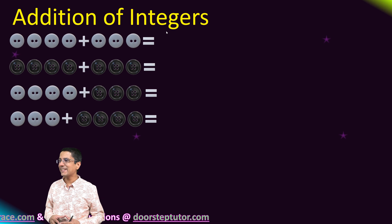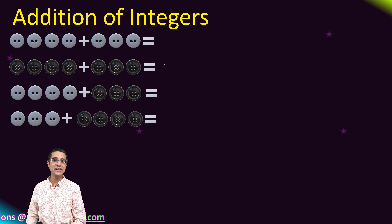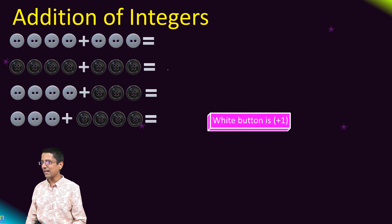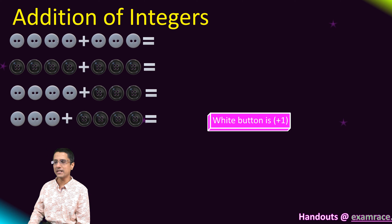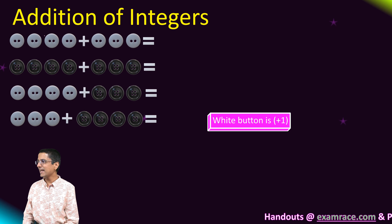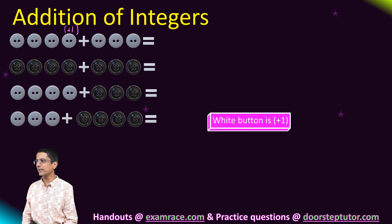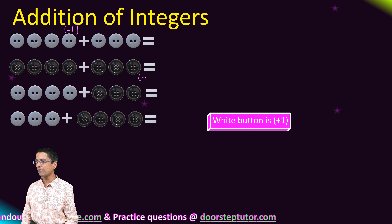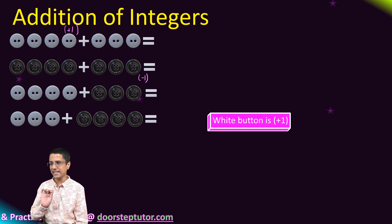Let's look at addition of integers. We'll use a simple analogy to understand it well. We have certain buttons — white buttons and black buttons. White buttons each denote a value of plus one. Black buttons each denote a value of minus one.